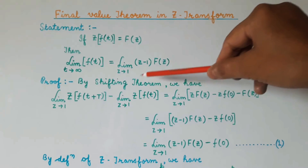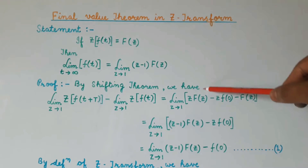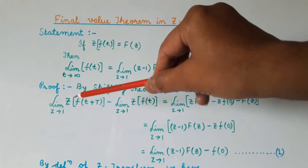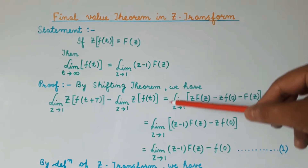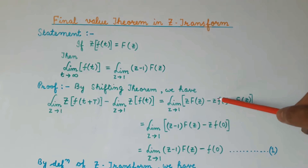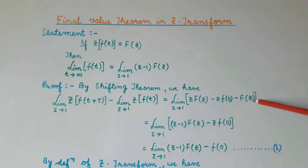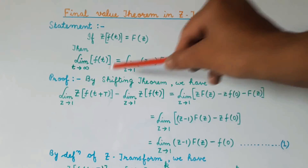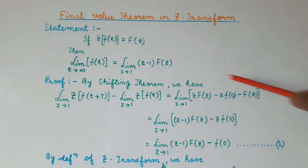Let us see the proof of this theorem. By the shifting theorem, we know that the limit of z·f(t+T) when z tends to 1, minus the limit of z·f(t) when z tends to 1, can be written as the limit when z tends to 1 of z·F(z) minus z·f(0) minus F(z). This is because from the shifting theorem, the z-transform of f(t+T) can be written as z·F(z) minus z·f(0), and the z-transform of f(t) is equal to F(z).